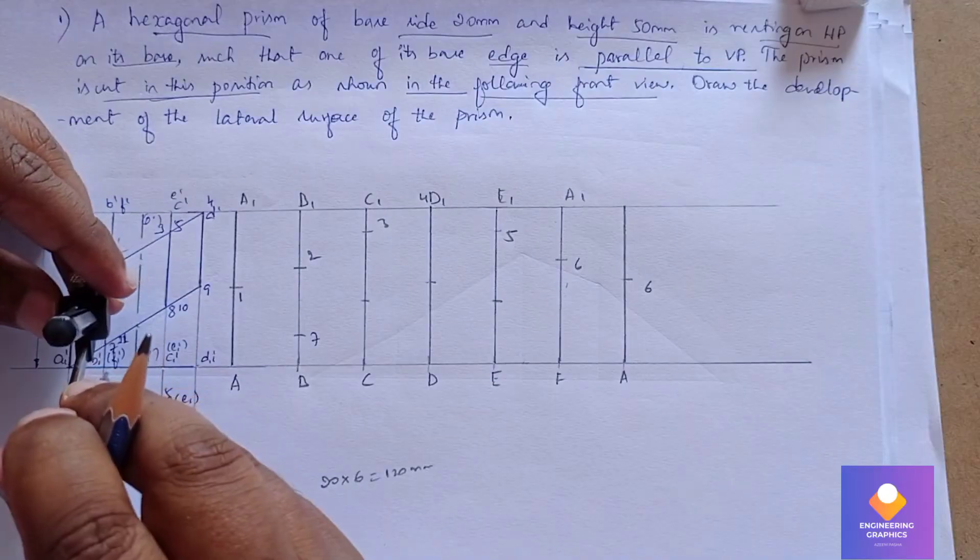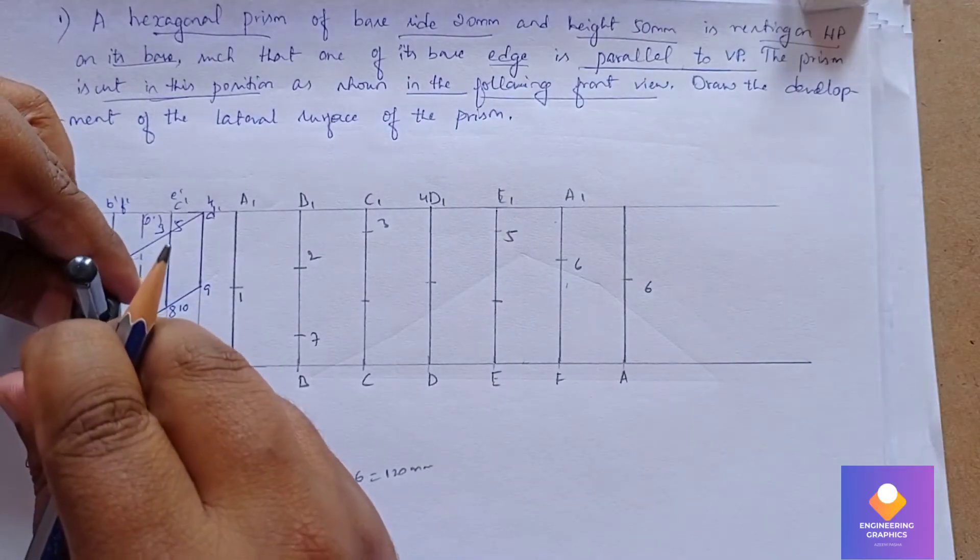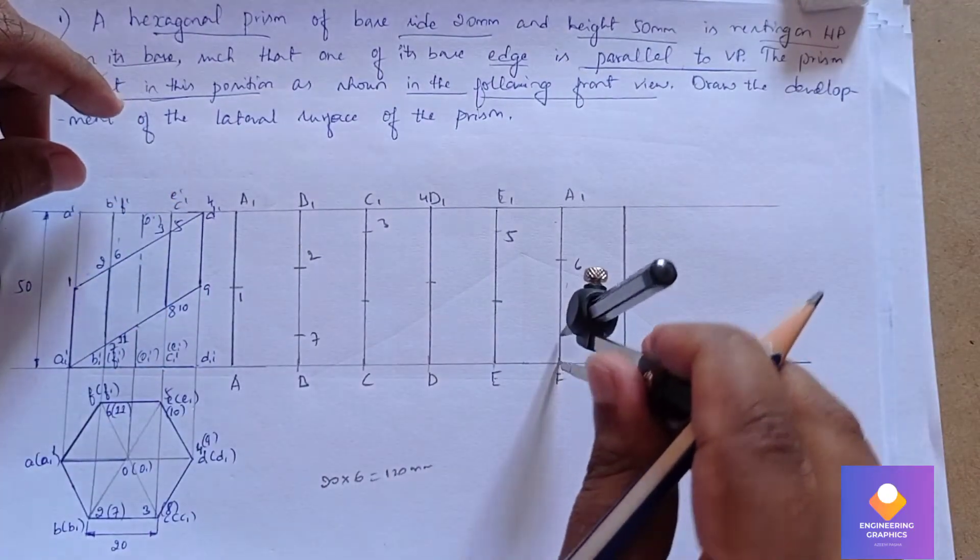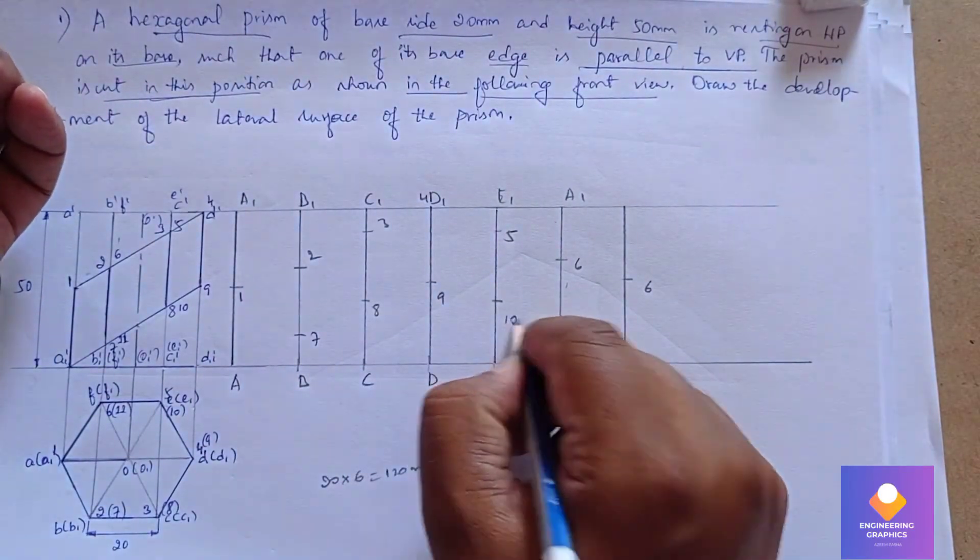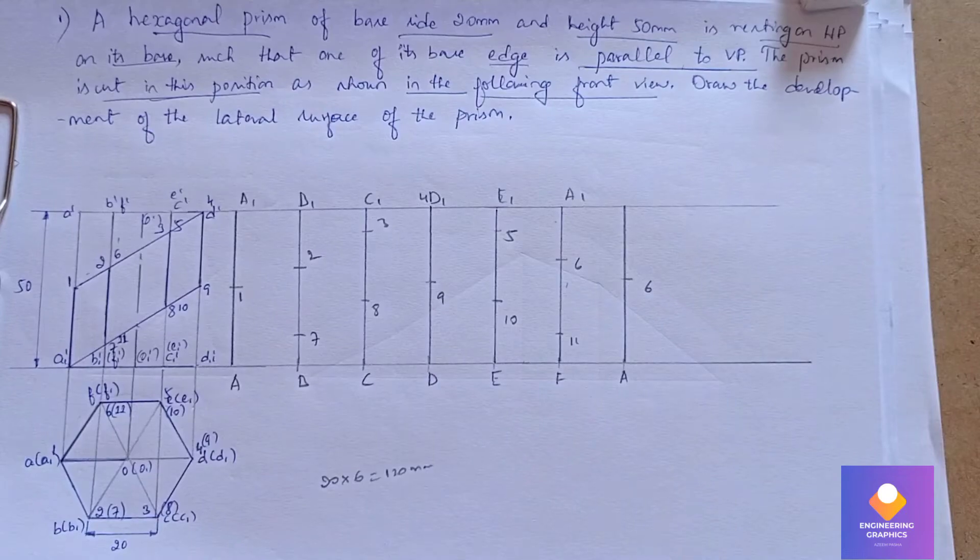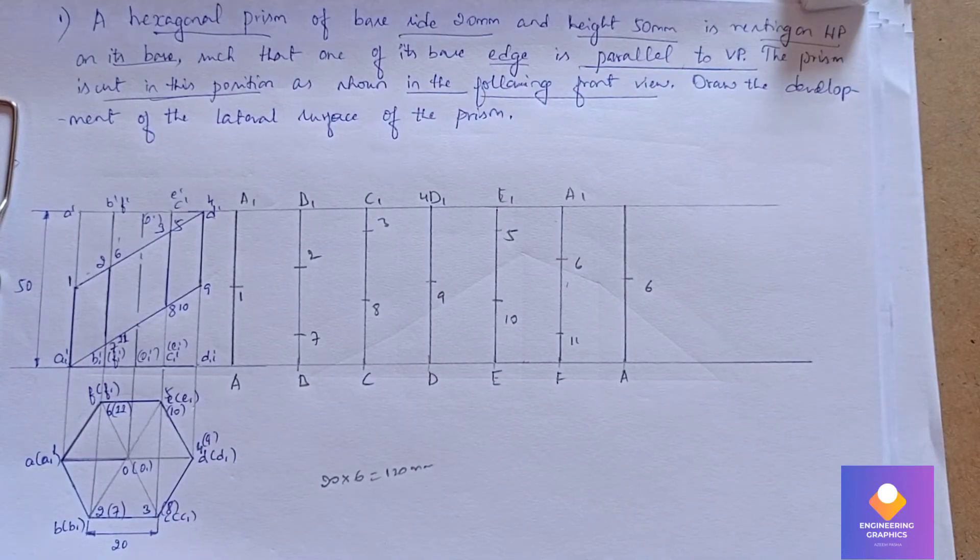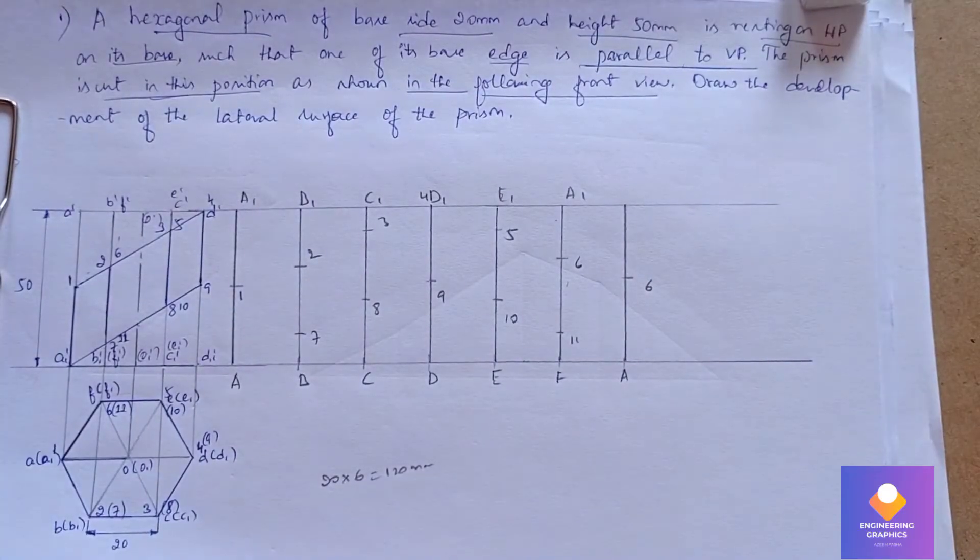And then again point 11. So that is 8, 9, 10, 11. Now we have to join all these points with a straight line with the help of a scale. Here we have to join it.